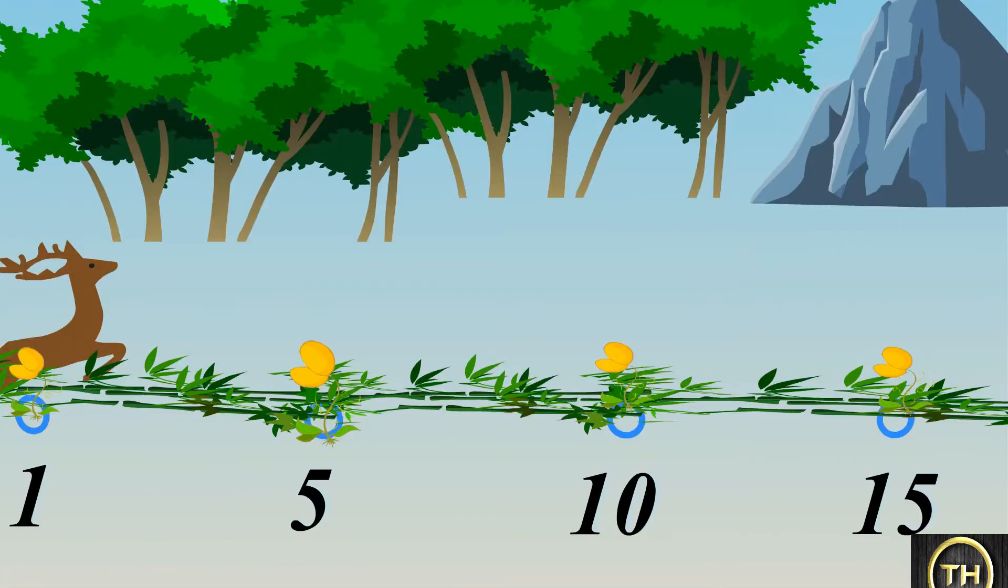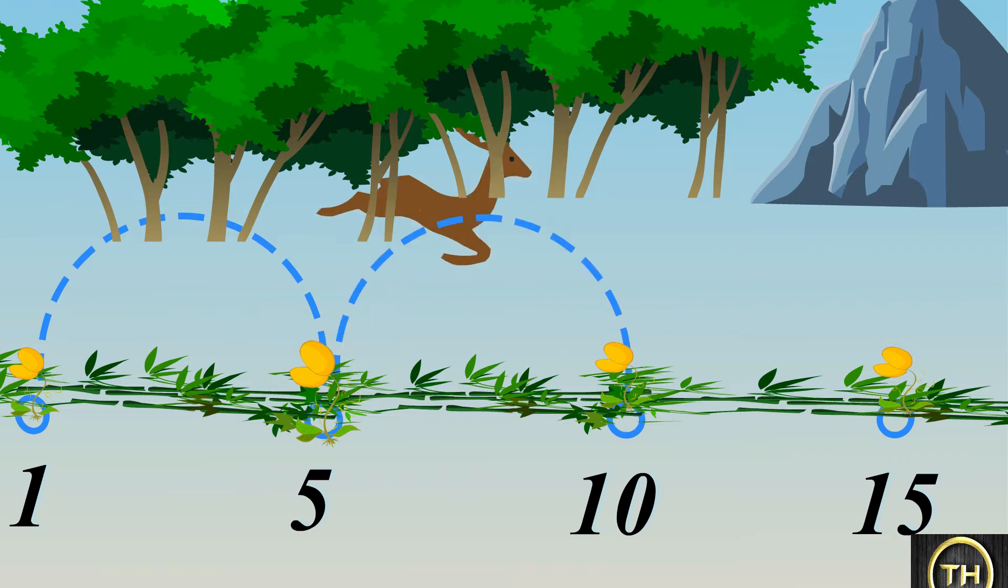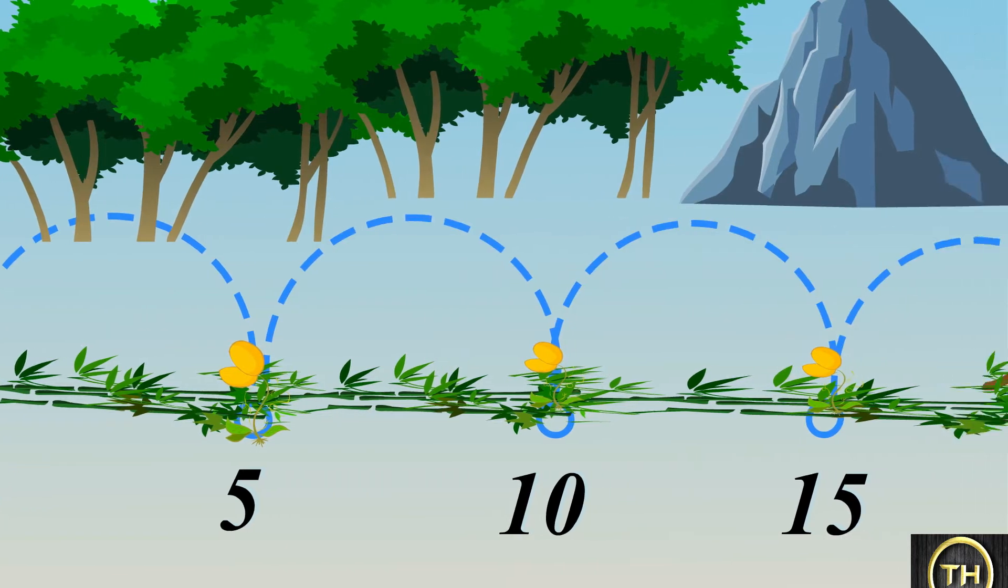Look at the deer jumping on the number line. First number it jumped on is 1, then on 5, then on 10, 15, and 20.